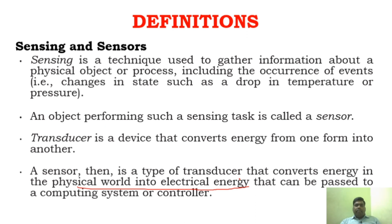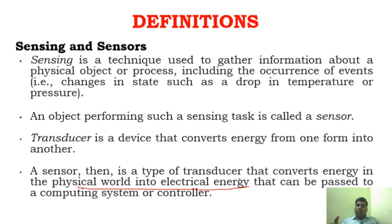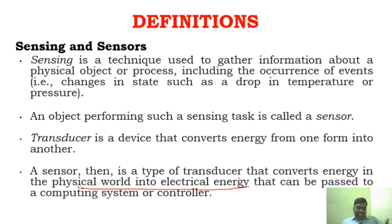A very good example of a sensor is a thermometer. In homes, you use a thermometer to measure body temperature. It measures the temperature using electronics inside it to show the exact temperature value. It gathers the information and transforms it into a signal so that it can be processed by a system where we can see the information visually or digitally. I believe you now understand what a sensor and sensing are.